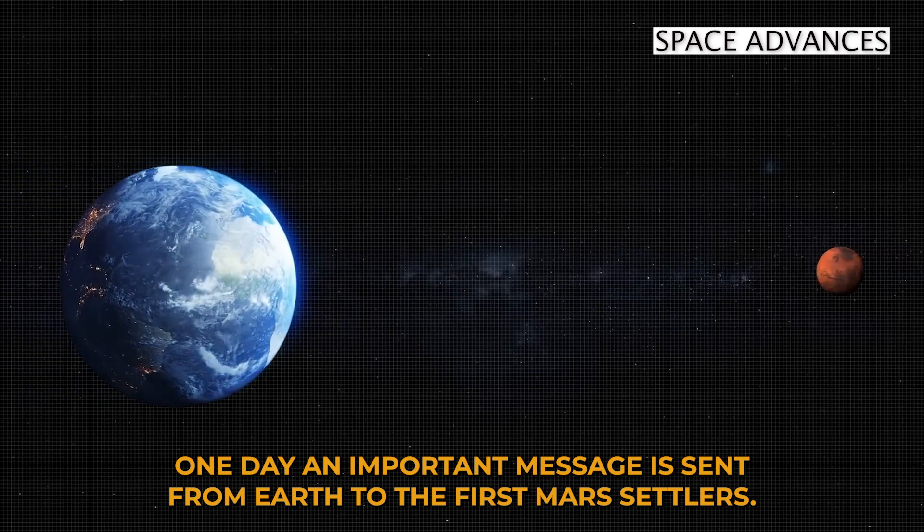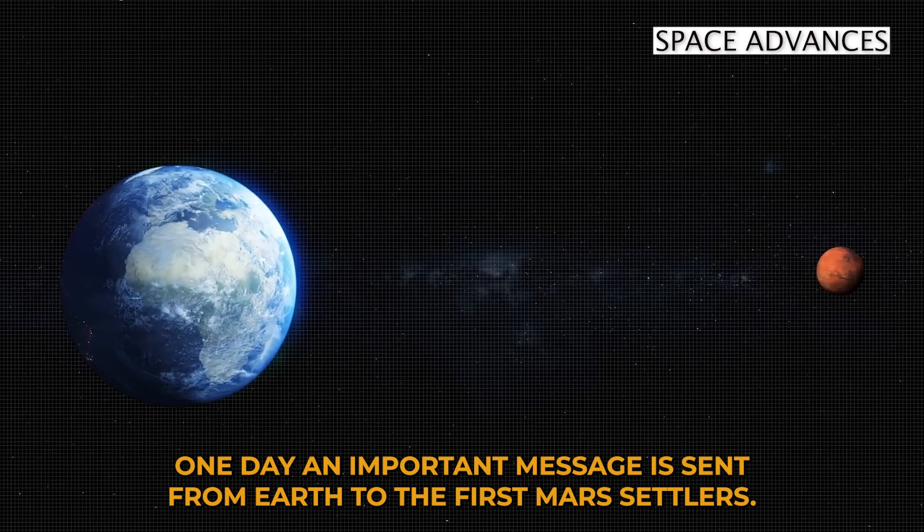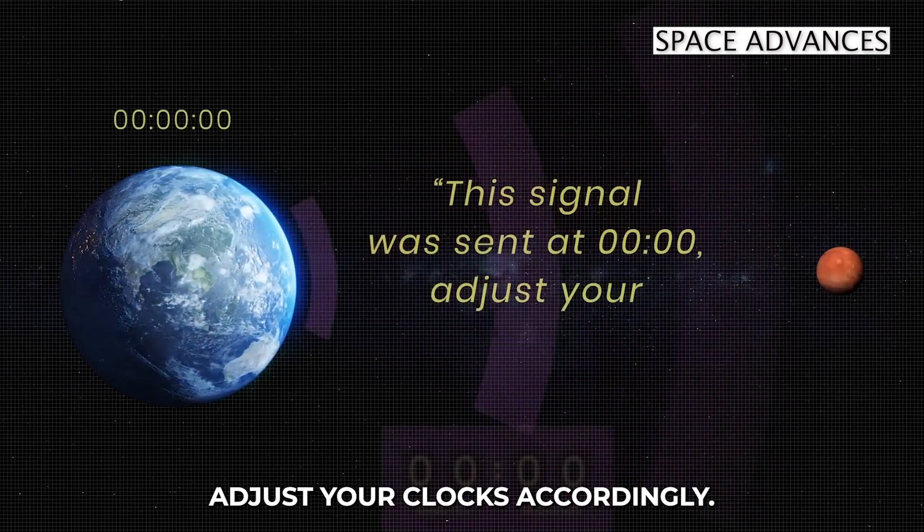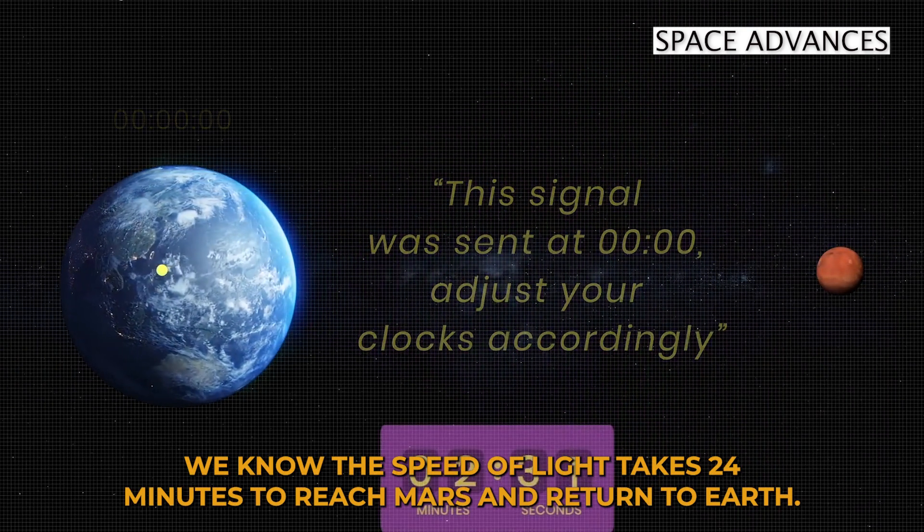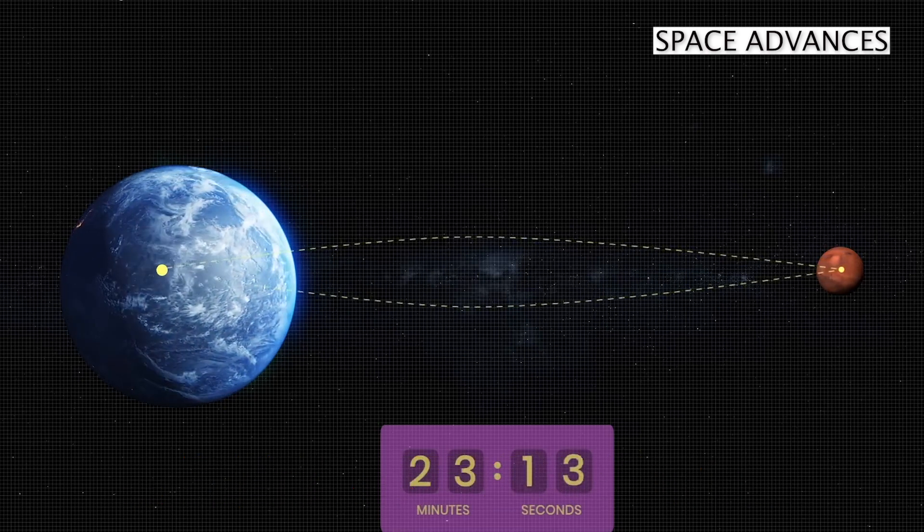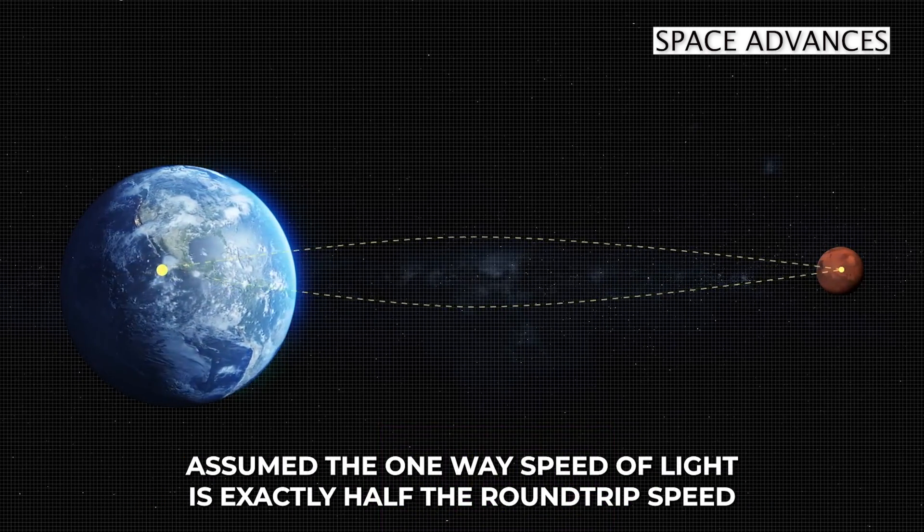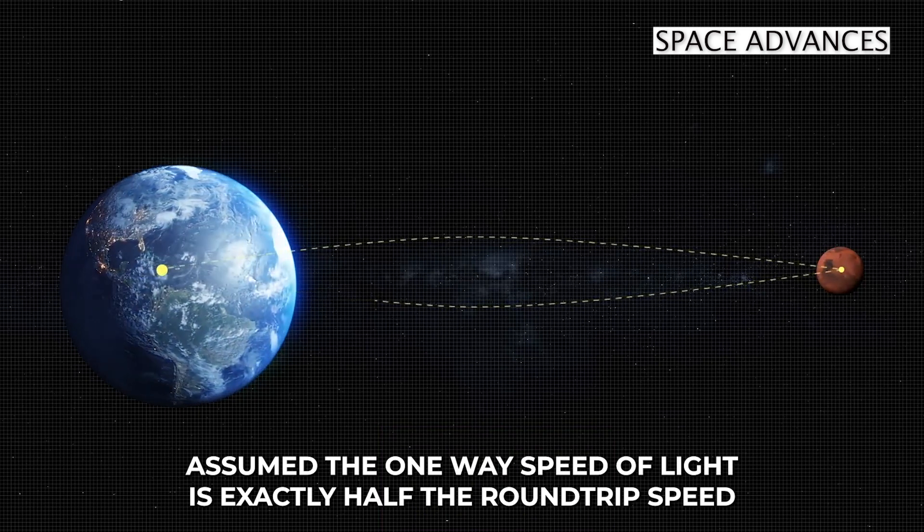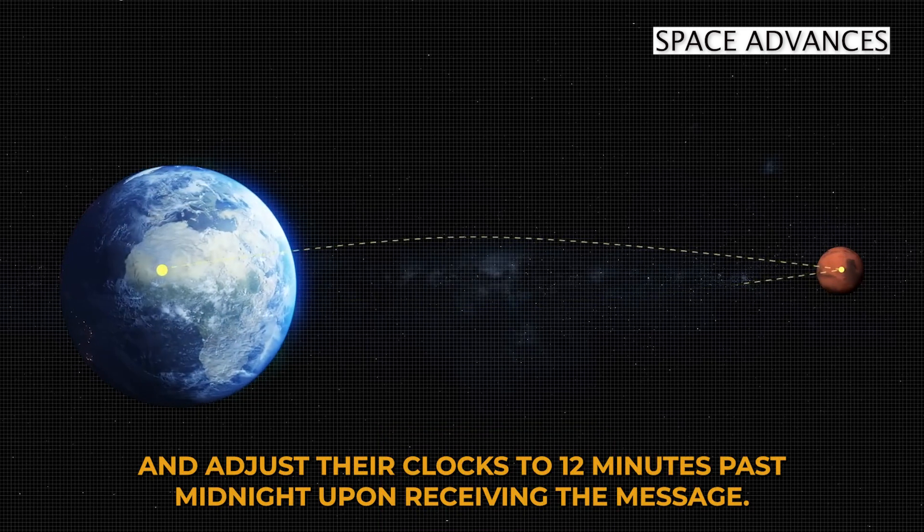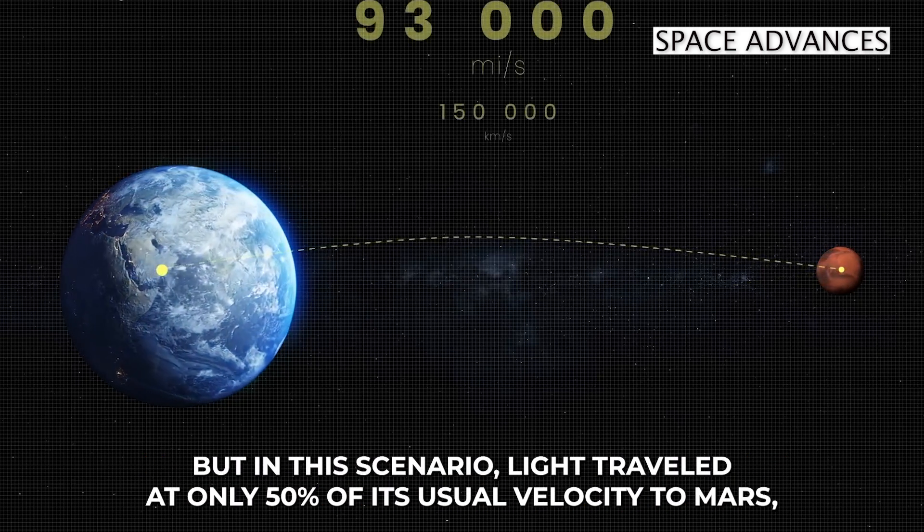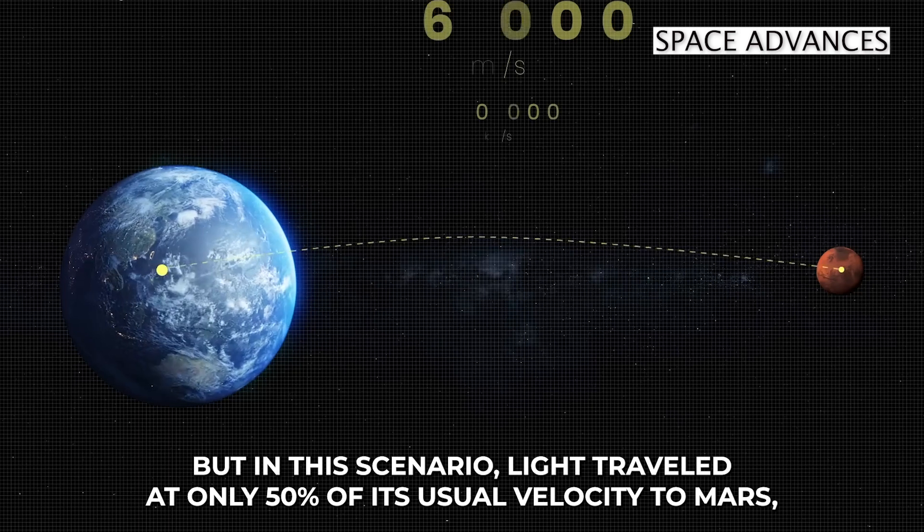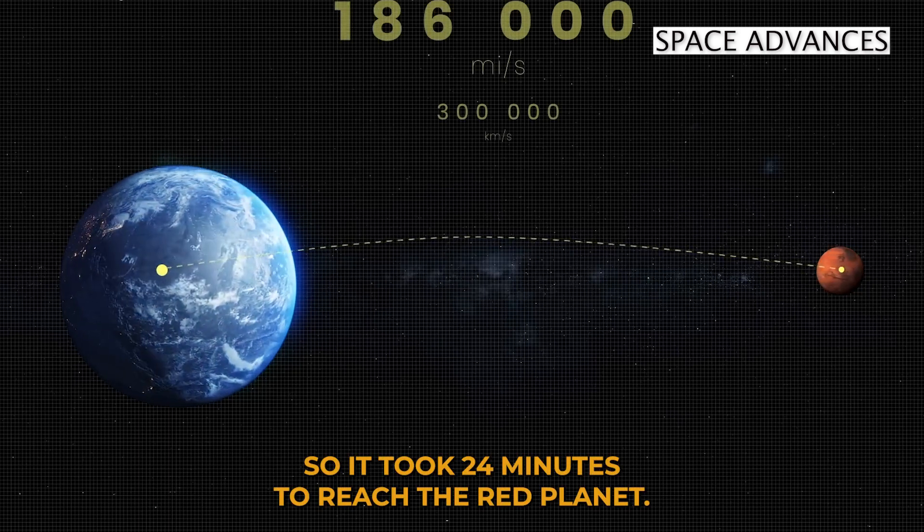One day, an important message is sent from Earth to the first Mars settlers. The message reads, this signal was sent at midnight. Adjust your clocks accordingly. We know the speed of light takes 24 minutes to reach Mars and return to Earth. The Mars settlers assume that the one-way speed of light is exactly half the round-trip speed, and adjust their clocks to 12 minutes past midnight upon receiving the message. But in this scenario, light traveled at only 50% of its usual velocity to Mars, so it took 24 minutes to reach the red planet.